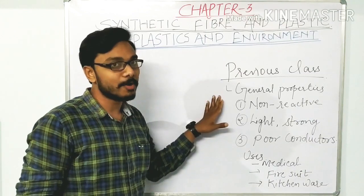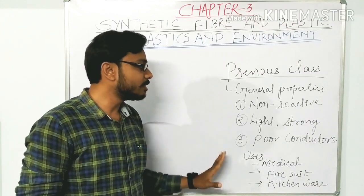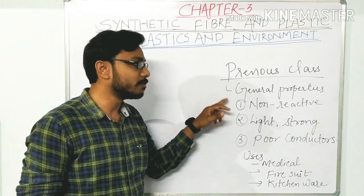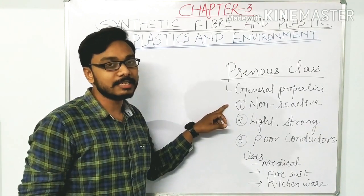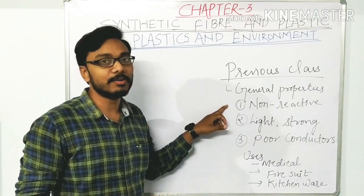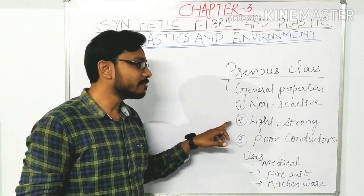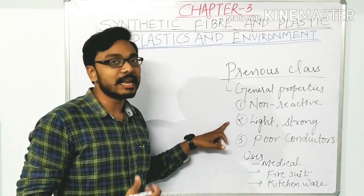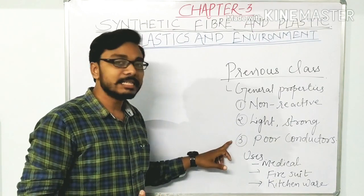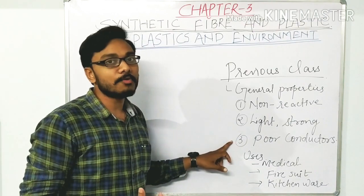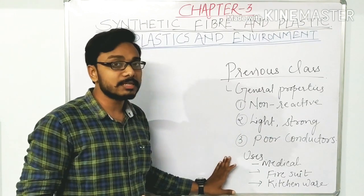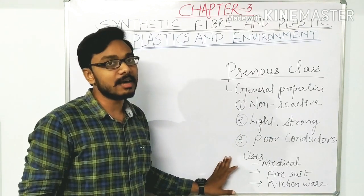In the previous classes we discussed the general properties of plastic in detail. First, plastic is the least reactive material compared to other materials. Then we saw that it is lightweight, very strong and durable, and also a poor conductor of heat and electricity.